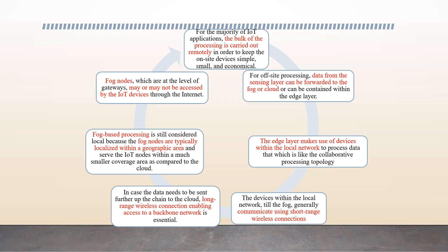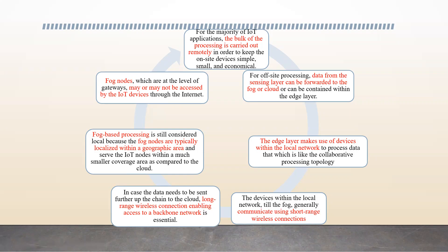In collaborative processing, you collaborate each and every node to form a big topology. Devices within the local network communicate using short-range wireless connections. For long-range communication, wireless technology with a backbone network is used. Fog nodes are essentially sensor nodes at the level of gateways, which may or may not be accessed by IoT devices even when internet is available.